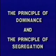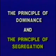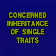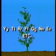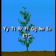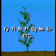The first two principles, the principle of dominance and the principle of segregation, were concerned with the inheritance of single traits. However, the pea plant has many traits. How do you think the results would be affected if two or more traits were studied at the same time?